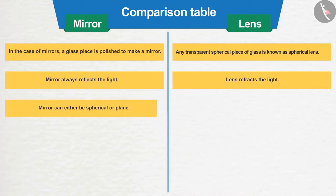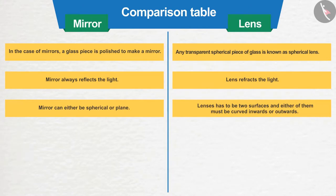Number 3: Mirror can either be spherical or plain. But in case of lenses, there has to be two surfaces, and either of them must be curved inwards or outwards.